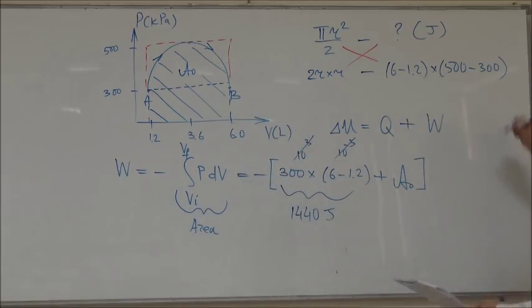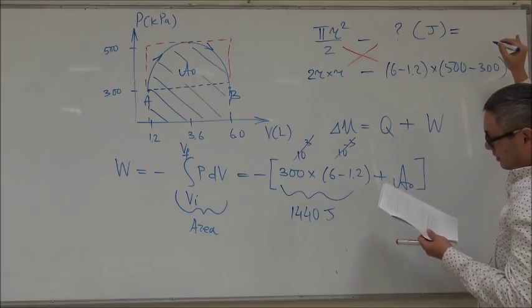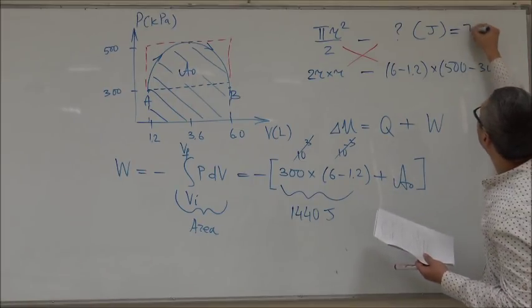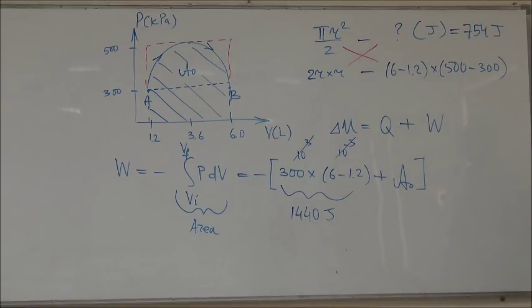If you do that for this, you get 754 joules. Okay, so then finally you can say that the work done is equal to negative of this plus this, and this gives you 2194 joules.